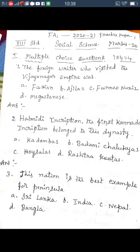Multiple choice question one: The foreign writer who visited the Vijayanagara Empire was — answer is option C: Fernão Nunes. The four options are Fahien, Fernão Nunes, and Megasthenes. Answer C, Fernão Nunes, is correct. Question two: Halmidi inscription, the first Kannada inscription, belongs to which dynasty? The options are Kadambas, Badami Chalukyas, Hoysalas, and Rashtrakutas.